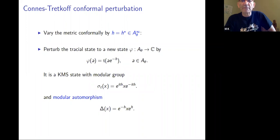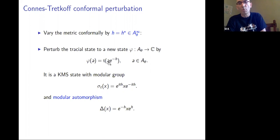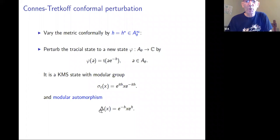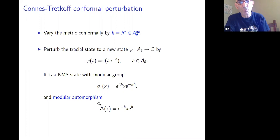You take a self-adjoint element in the smooth part of the noncommutative torus, and you change your trace by doing a usual perturbation of the trace. This trace is now a state — it's not a trace anymore, it's an unnormalized state. It's a KMS state with modular group σ_t and modular automorphism denoted (unfortunately) by Δ. We'll use a triangle later for the Laplacian and bold Δ for the modular automorphism of this perturbation.